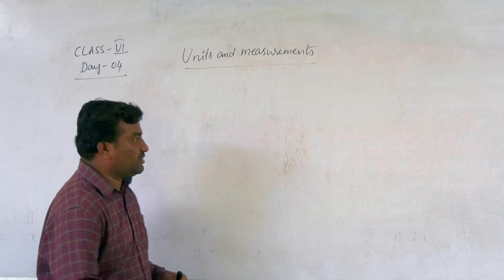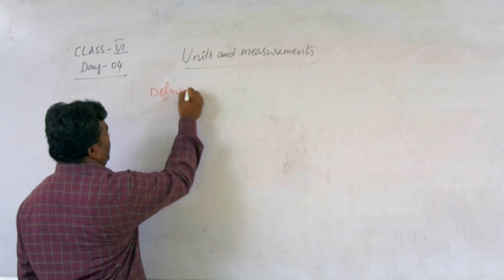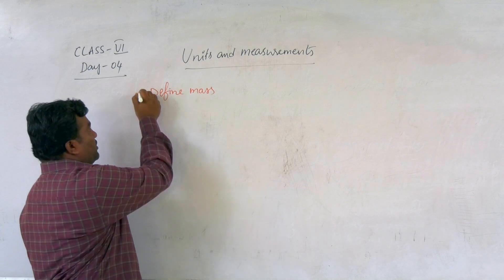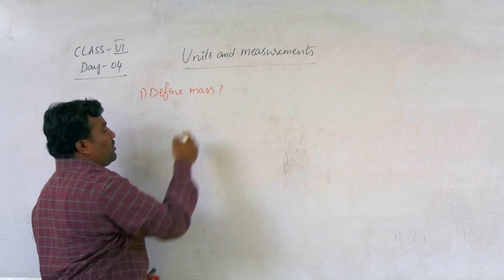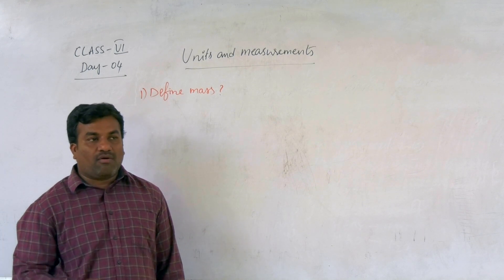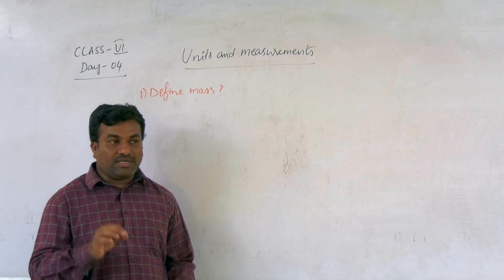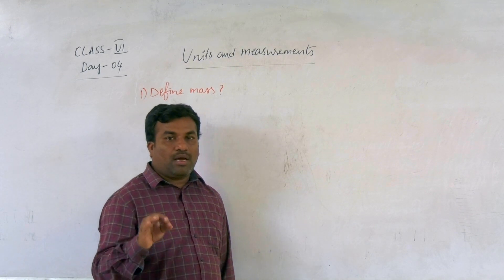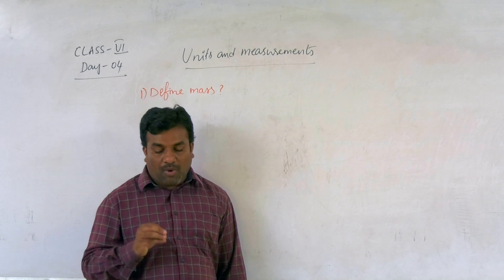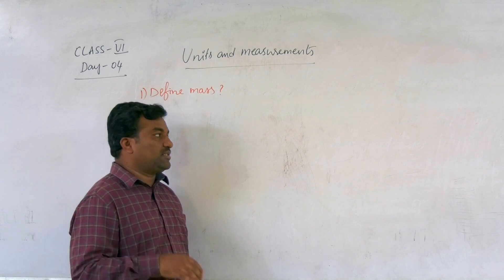First question: define mass. What is mass? Mass means quantity of matter contained in the body. Quantity of matter contained in the body is called mass. Otherwise, mass is a measure of the amount of matter in an object.